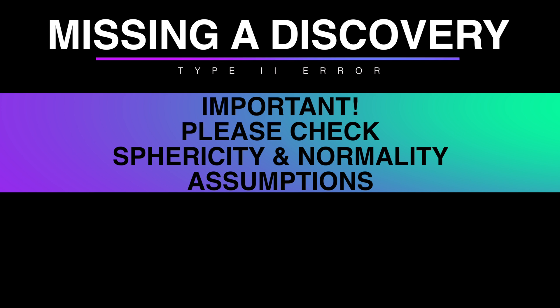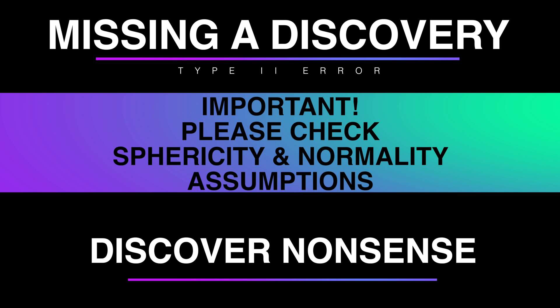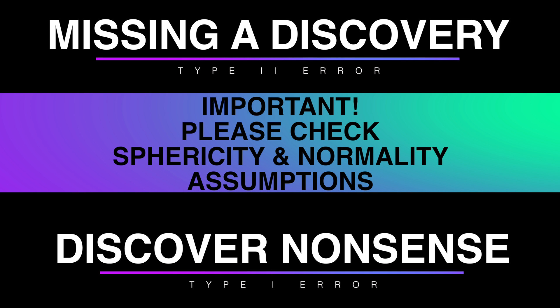Now, the last thing is important. Please check both sphericity and normality assumptions. Otherwise, you'll choose a wrong test, and either miss a discovery, having a wrong big p-value, also called type 2 error, or you'll find some nonsense, having a wrong small p-value, also called type 1 error.